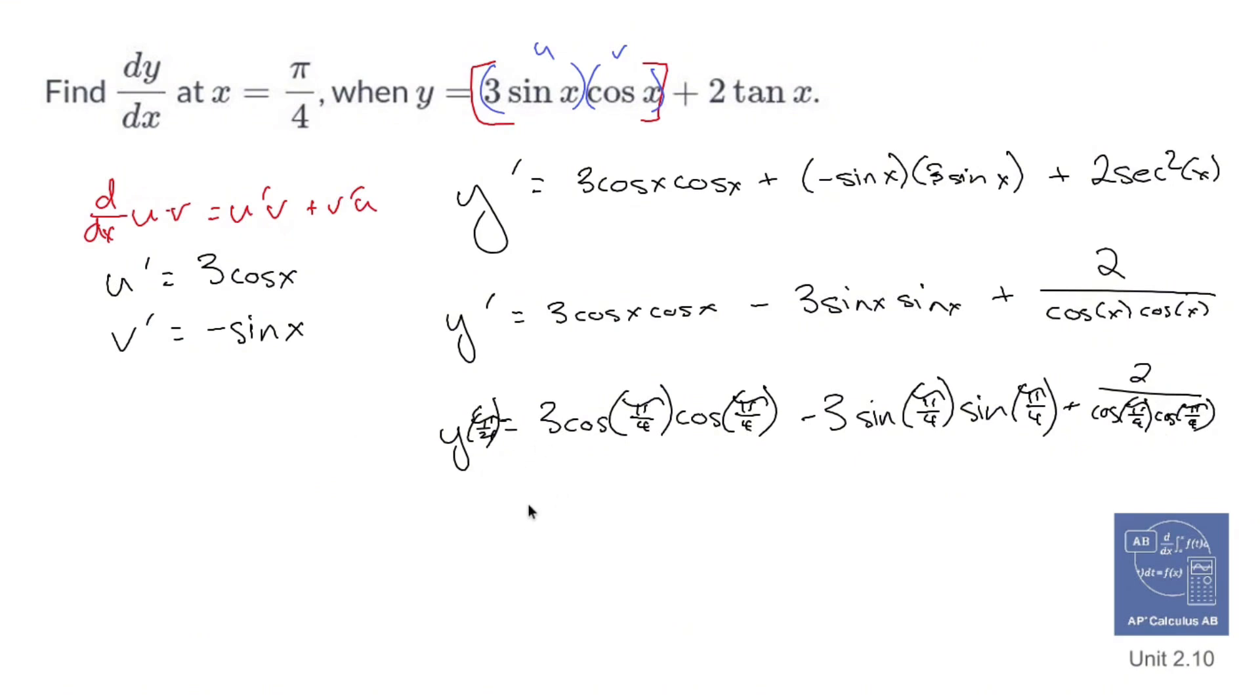Now, if you remember from the unit circle and stuff like that, cos pi over 4 is root 2 over 2. So you're going to be 3 times root 2 over 2 times root 2 over 2 minus,